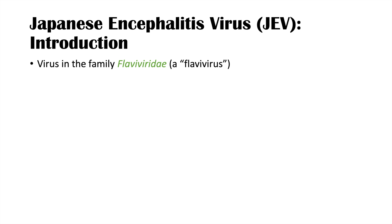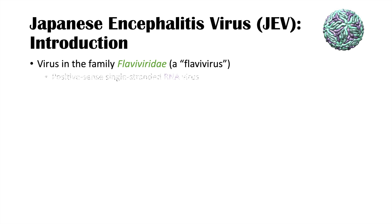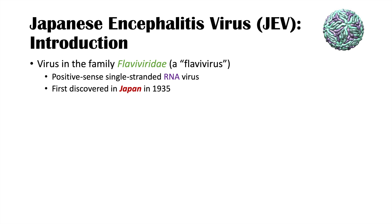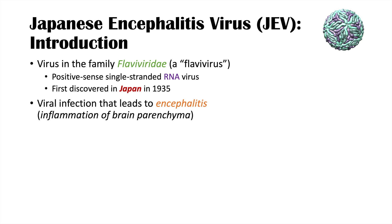The Japanese encephalitis virus, or JEV, is a virus in the family Flaviviridae — it is a flavivirus. It is a positive-sense single-stranded RNA virus, and it was first discovered in Japan in 1935, which is where it got its name. The other part of its name comes from the fact that this virus causes encephalitis, or an inflammation of the brain parenchyma.